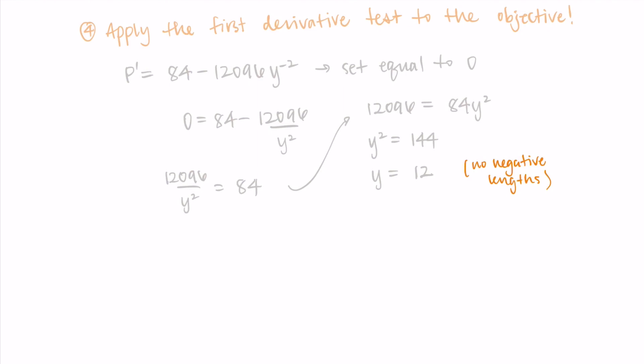So to be really formal, you should do the first derivative test on that y equals 12. I'm not going to write that out here, you can choose points next to it, substitute them into the first derivative, and see that this is indeed the minimum. So y equals 12 gives us the minimum cost for the perimeter.